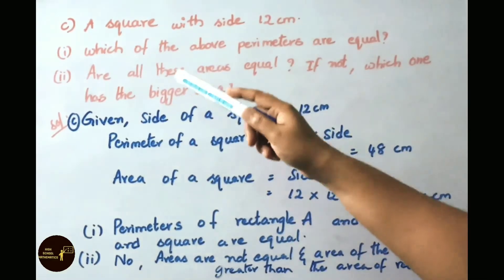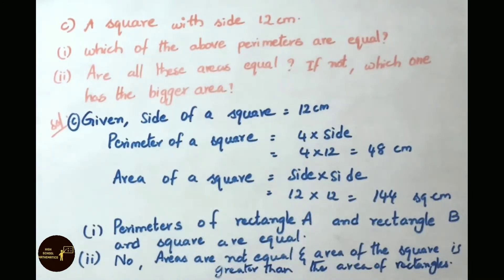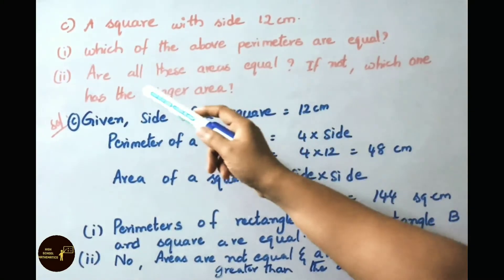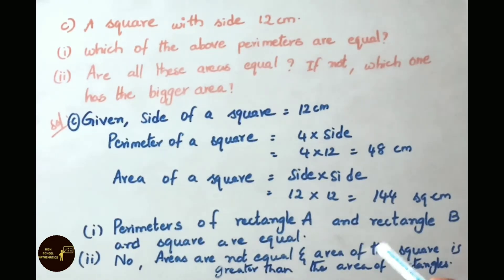In question 1 they ask: which of the above perimeters are equal? Perimeters of rectangle A, rectangle B, and the square are all equal — that is 48 cm. In question 2 they ask: are all these areas equal? No, areas are not equal. Area of the square is greater than the area of both rectangles.